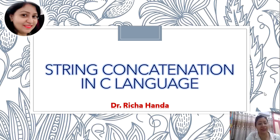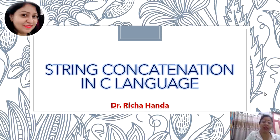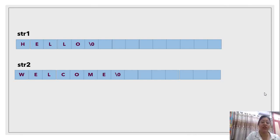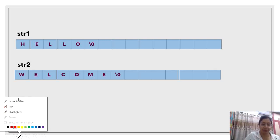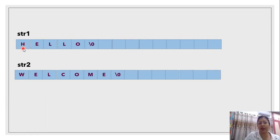So let's start. First of all, we will understand that if we have two strings, how can we connect them? What fundamental things do we need to know? Here we have two strings: STR1 and STR2. STR1 contains the word 'Hello', and STR2 contains the word 'Welcome'. STR1 is declared with a size of 15, which is an array of characters — it is a string.